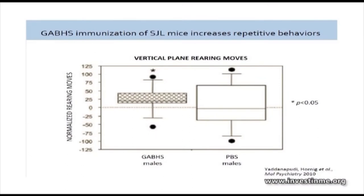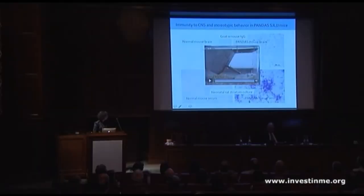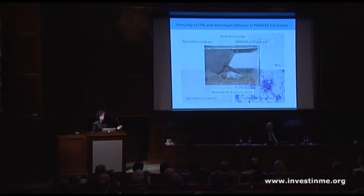Our animals end up doing back flips — they look like little circus mice. When we immunize them — we give them dead streps, so it's not an infection — they have this increase in rearing movements. The mouse with the black mark on his tail is doing these repetitive movements most of his day, which are related to the antibodies you can see here. His cage mate — not immunized, no black on the tail — will just hang out and observe his neighbor.